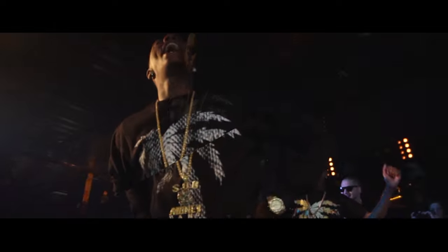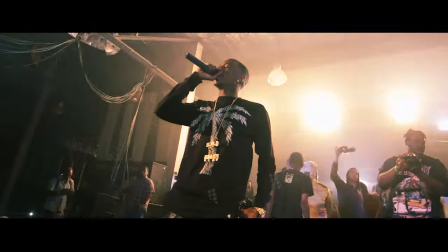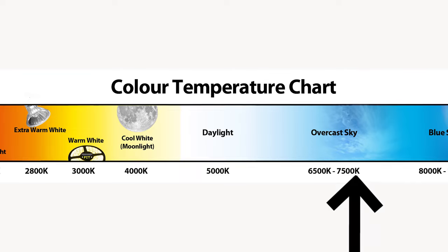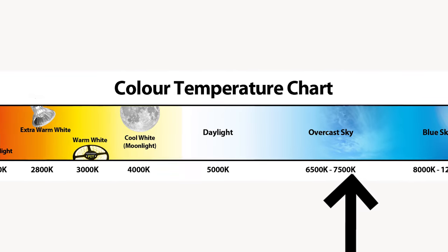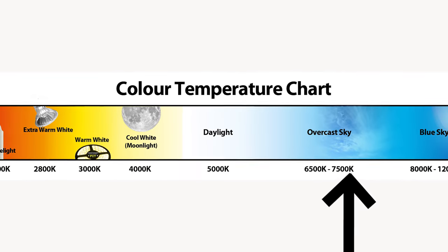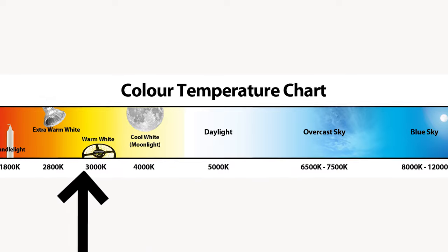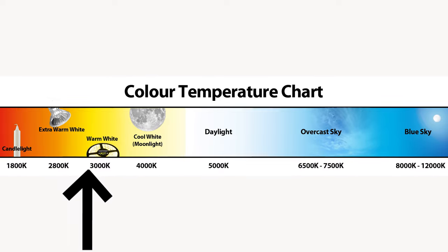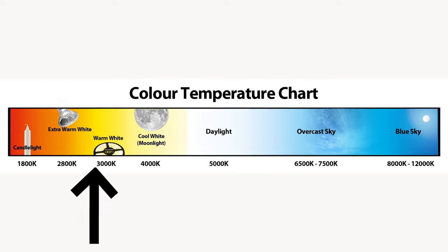Every light has a color temperature, and color temperature is measured in Kelvin. Anything above 5,000 Kelvin will have a cool color temperature, meaning the light will appear bluish. Anything below 5,000 Kelvin will be warm, meaning the light will appear orangey. Now that we understand color temperature, we're going to talk about the different types of lighting equipment.